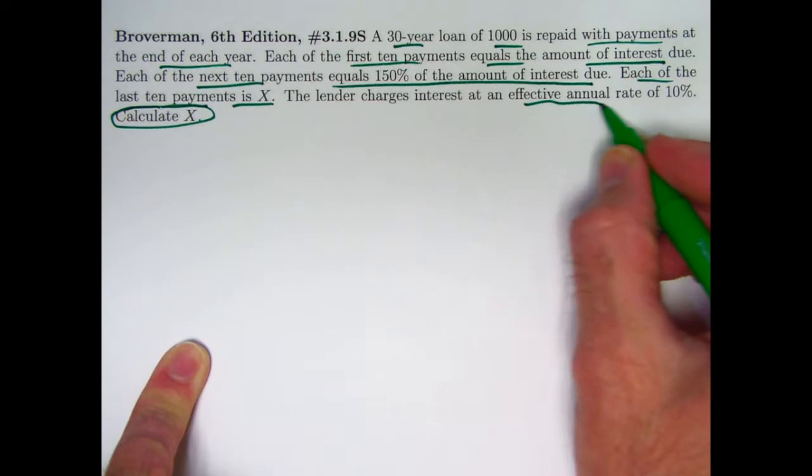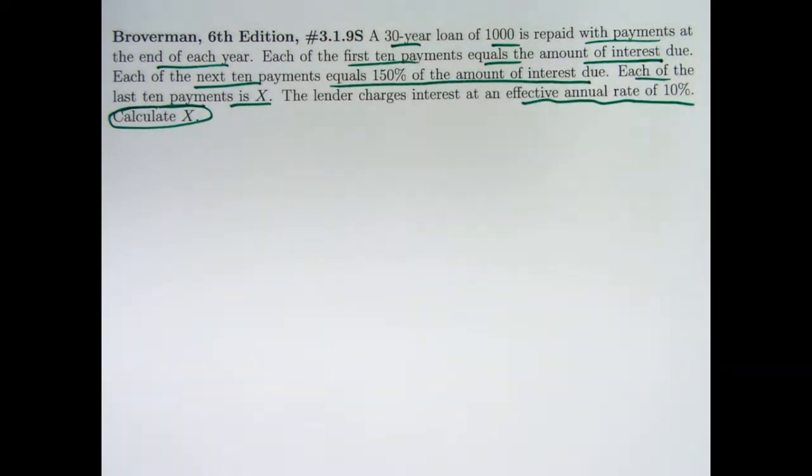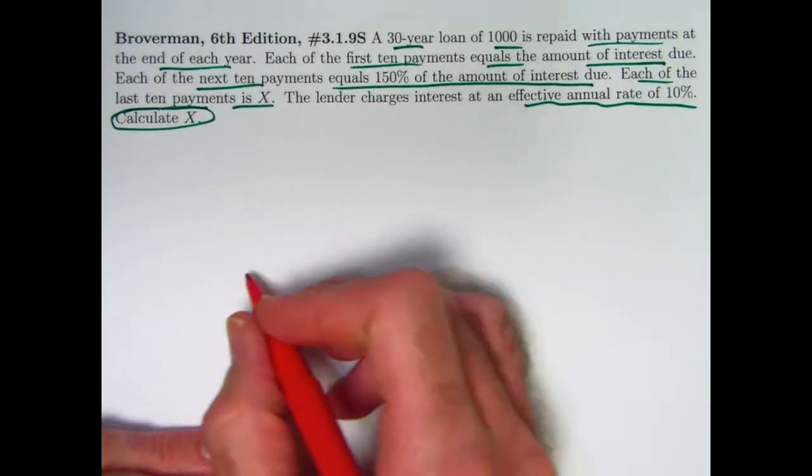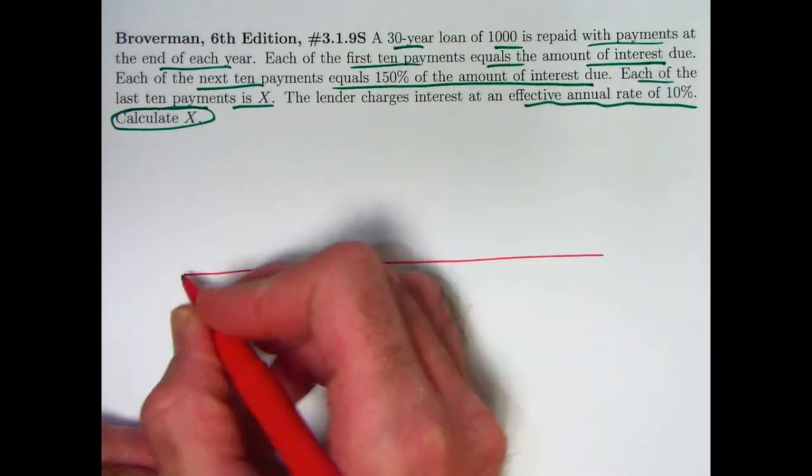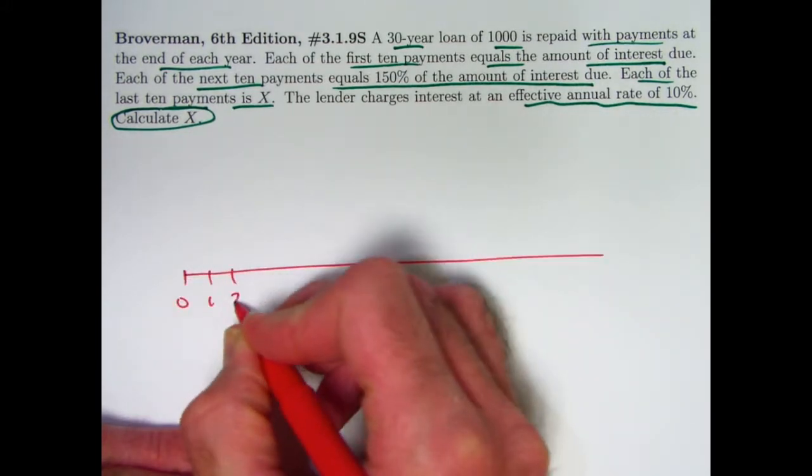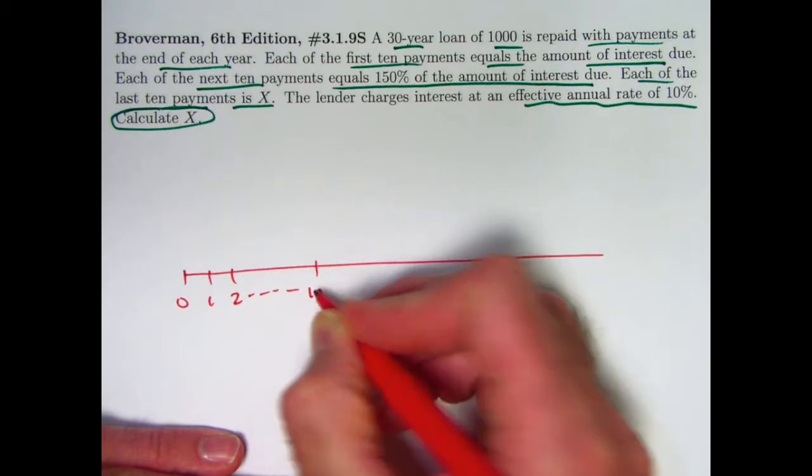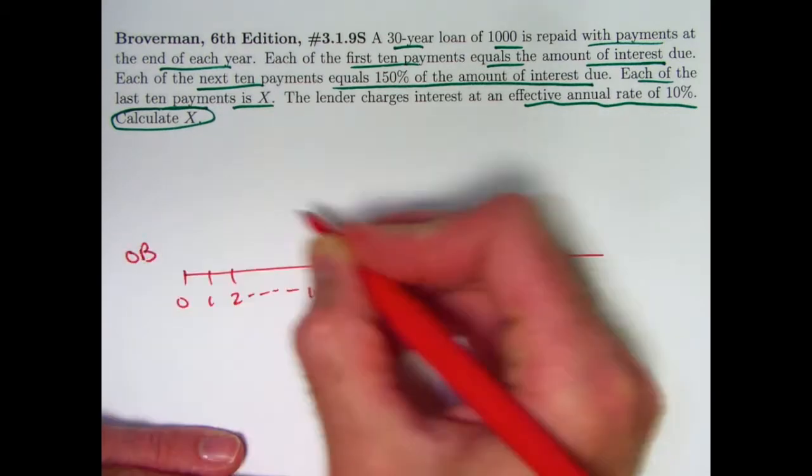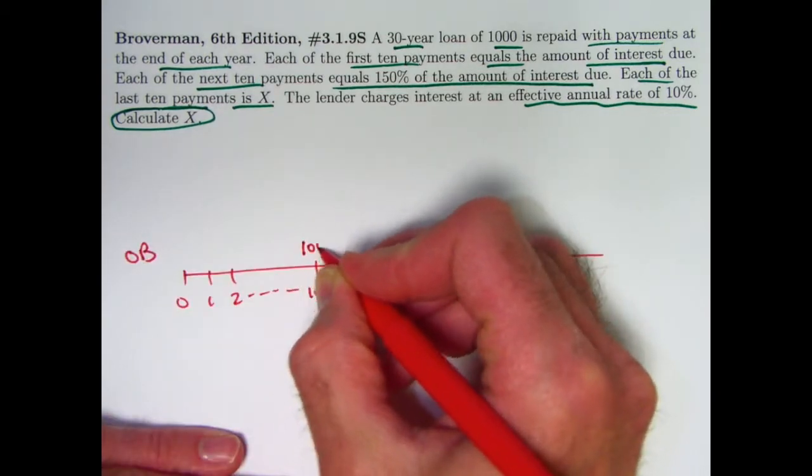The effective annual interest rate is 10%. I hope that within a few seconds of reading this you realize right away that the first 10 years really don't matter. I'll go ahead and put them on here, but they don't matter. Your outstanding balance at time 10 is going to be the same as the loan amount $1,000.